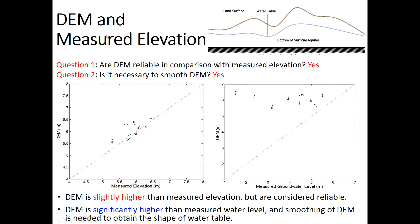We then looked at the DEM and measured elevation. The first question is whether the DEM is reliable compared to measured elevation. Here is the measured elevation at the site for each well. We used a 3×3 resolution DEM, and you can see the DEM is slightly higher than the measured elevation, but overall the DEM is pretty reliable for representing surface topography.